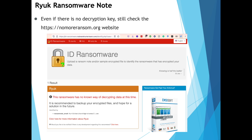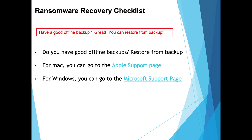You can also check the nomoreransom.org website. That doesn't mean they don't have the decryption key for the ransomware that's on your computer. Now, do you have a good offline backup? It's important to have offline backups because any backups actively connected — whether it's a cloud or USB — can also be encrypted. But if you connect an external USB hard drive once a week, make a backup, and disconnect it, you should have those backups safe.